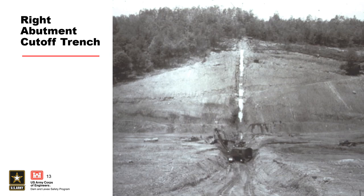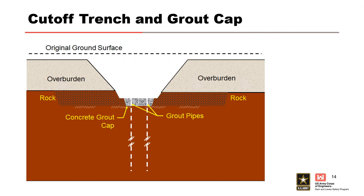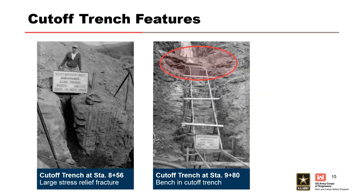Construction of the dam began in June 1947. The narrow cutoff trench was excavated down the right abutment and a short distance across the valley bottom, extending through overburden and into the underlying bedrock. A concrete grout cap was placed in the bottom of the trench, and drilling and grouting of the right abutment was performed through the grout cap. Very large stress relief fractures are present in the rock, and one fracture was located very near the incident location. There is also a bench in the abutment and the cutoff trench that may have been the source of differential settlement and embankment cracking.